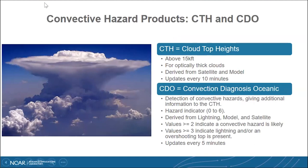For CDO, it's a hazard indicator from zero to six. It uses satellite information from two channels from the geostationary orbits. It's also derived from lightning, the model, and satellite. Values greater than or equal to two are really indicative of a convective hazard. Values greater than three mean we have lightning in the area and also a much more significant or overshooting top. It's an indicator for the amount of hazard that's present.